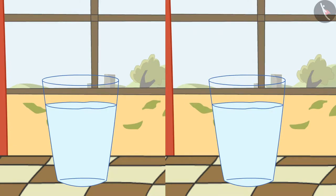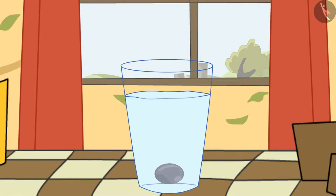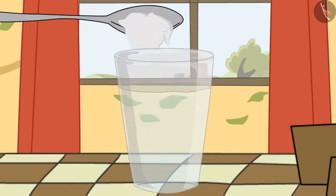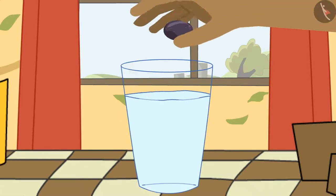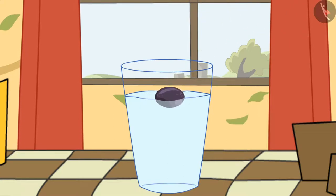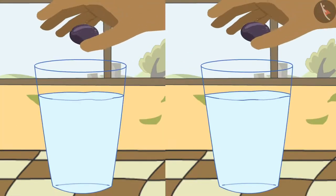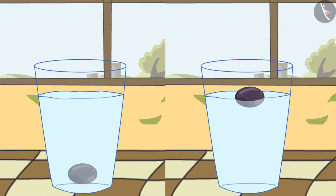Let's perform a simple experiment to see what role density plays in floating and sinking of an object. Take two glasses filled with water. In the first glass place a grape. In the second glass add a few spoons of salt and then place a grape. You will notice that the grape sinks in the first glass while the grape floats in the second glass.